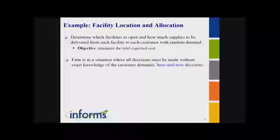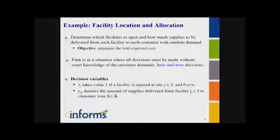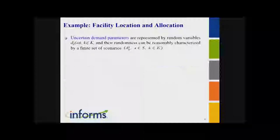Let me continue with a small example which is intuitive and well known — the classical facility location allocation problem. Basically, we determine the locations and inventory levels of facilities. Suppose a firm has to make all design decisions without knowing the exact demands — this is what we call here-and-now type decisions. The X variables identify the location of facilities, and the Y decisions represent delivery amounts from each facility to demand points.